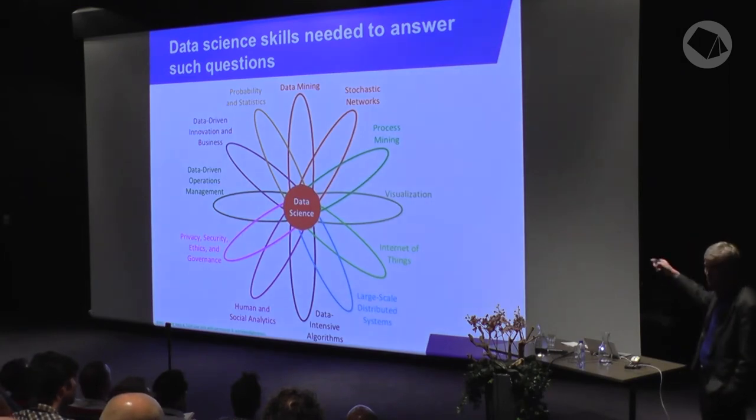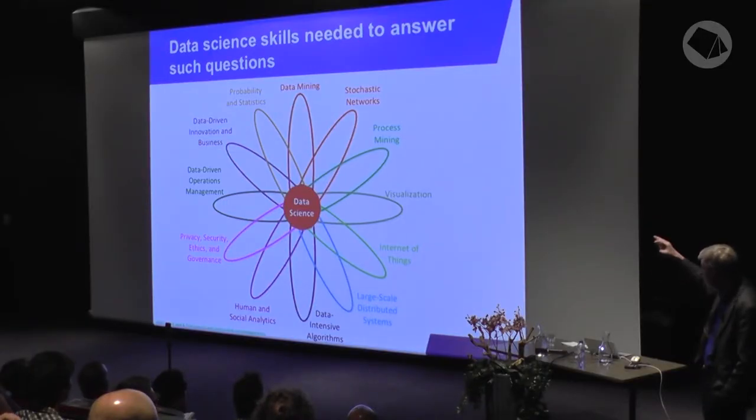To answer these types of questions, you need different skills. It is not just knowledge of computer science or particular algorithms. It is a spectrum of things that can all be in one person, or in a team covering different disciplines. There are obvious suspects like statistics, data mining, process mining, and visualization. There are also things related to infrastructure, and to the social and economic aspects. We are also defining bachelor and master programs that provide good coverage of all of these areas.